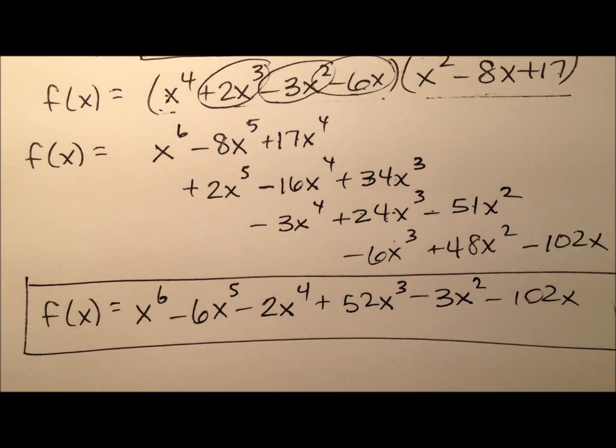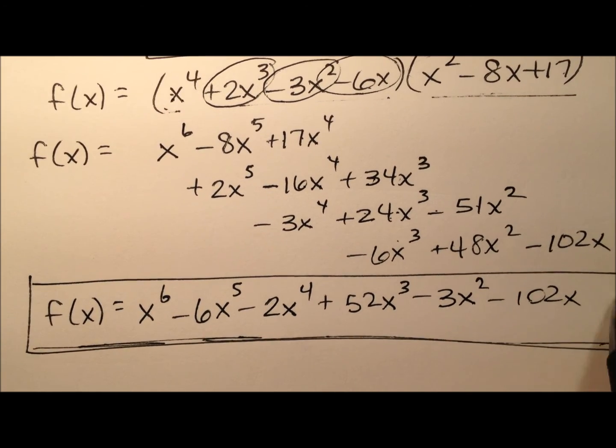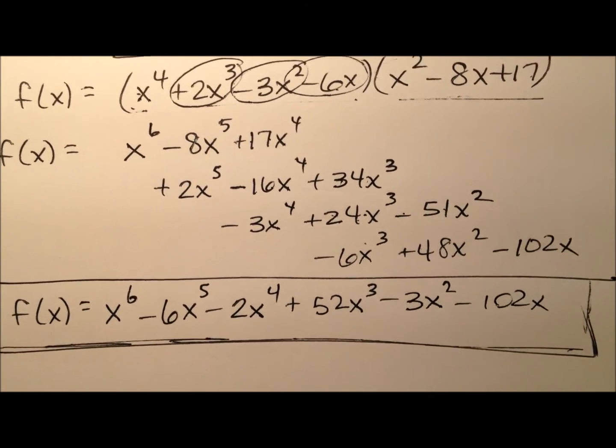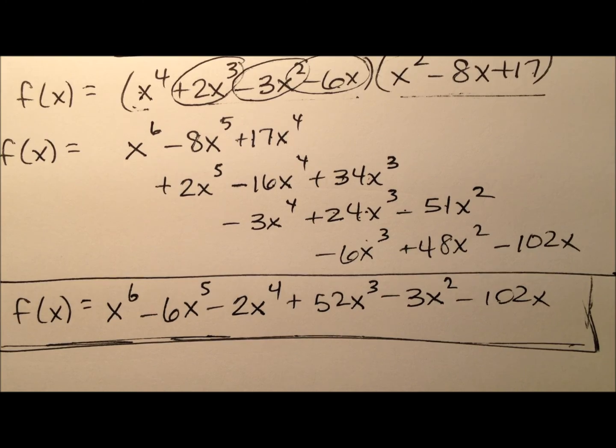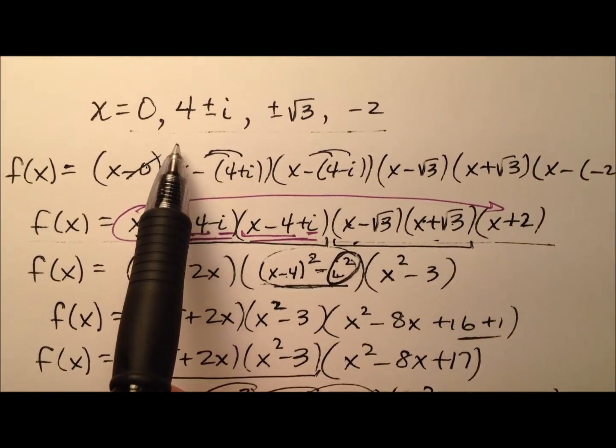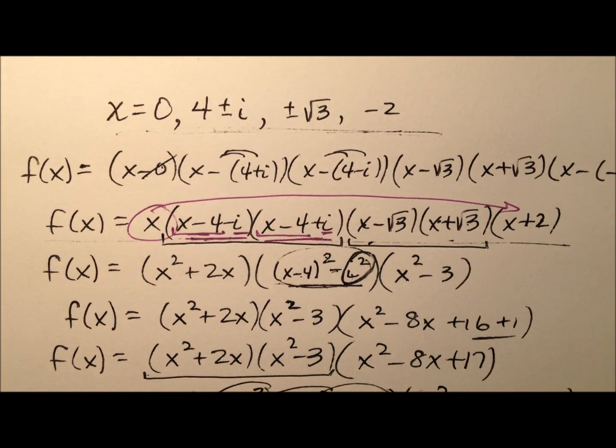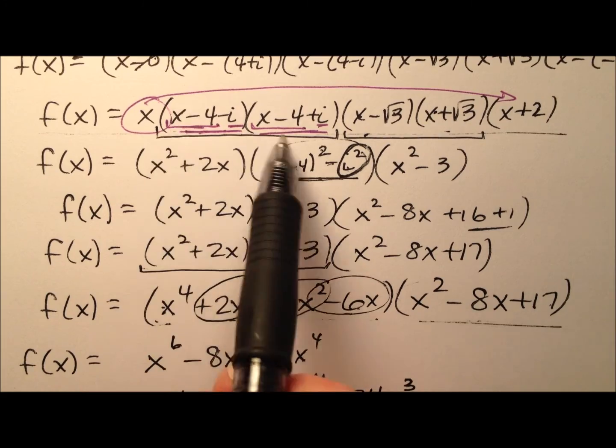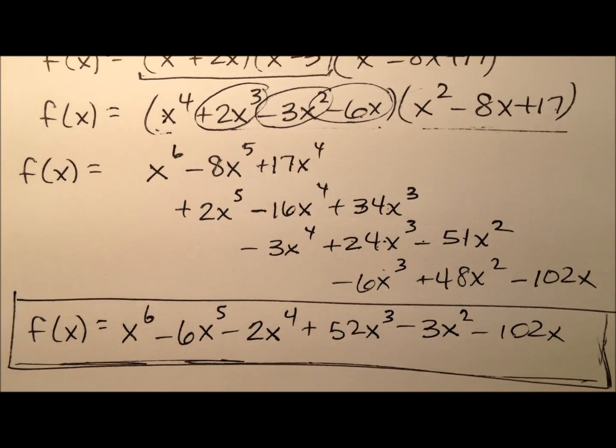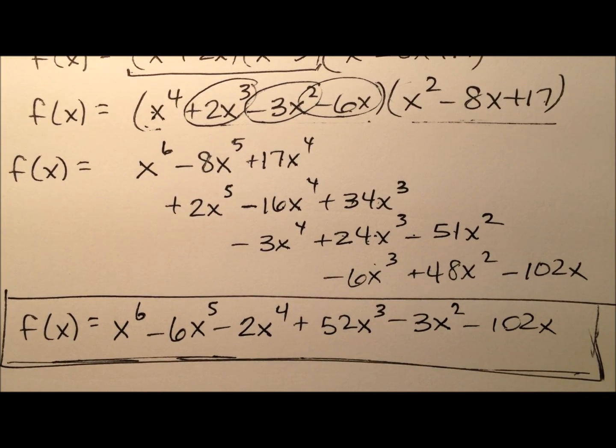So here is my function f of x. And it's written in standard form. And it's the simplest polynomial function possible given these initial six roots. It was nice because we had these in conjugate pairs. So the multiplication process was not too bad at all. But here's that finished polynomial function.